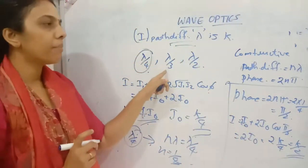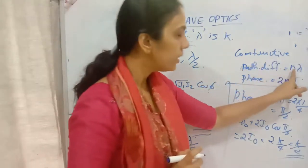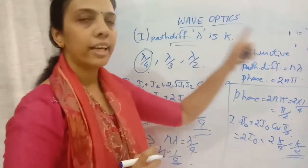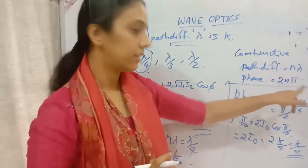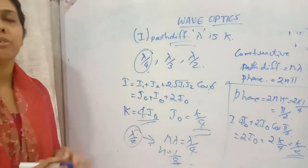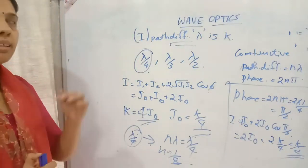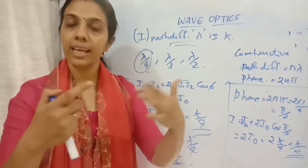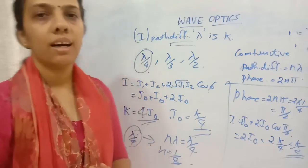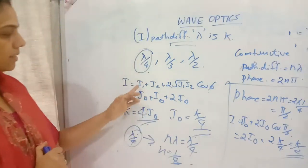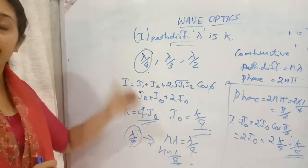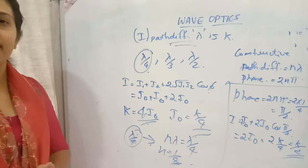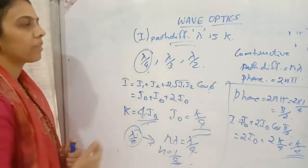For path difference λ/3: nλ = λ/3, so n = 1/3. Phase difference φ = 2π/3. You can find the intensity using I = 2I₀ + 2I₀·cos(2π/3). If intensities are not mentioned separately, you take the same intensity for both sources. This is how we find intensities for different path differences. This experiment is done with the help of Young's double slit experiment, which we will study next.